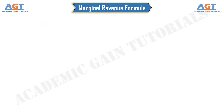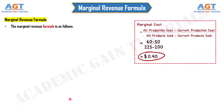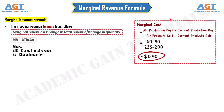The marginal revenue formula is as follows: marginal revenue equals change in total revenue divided by change in quantity. It can also be written as MR = ΔTR / ΔQ, where ΔTR is the change in total revenue and ΔQ is the change in quantity.